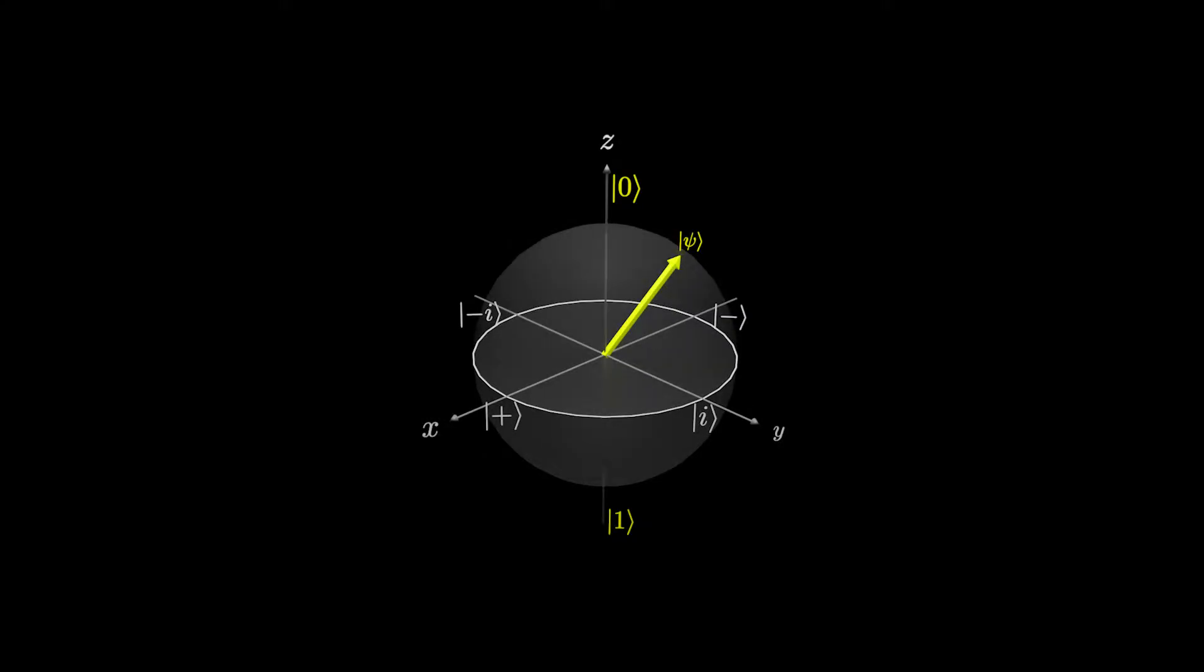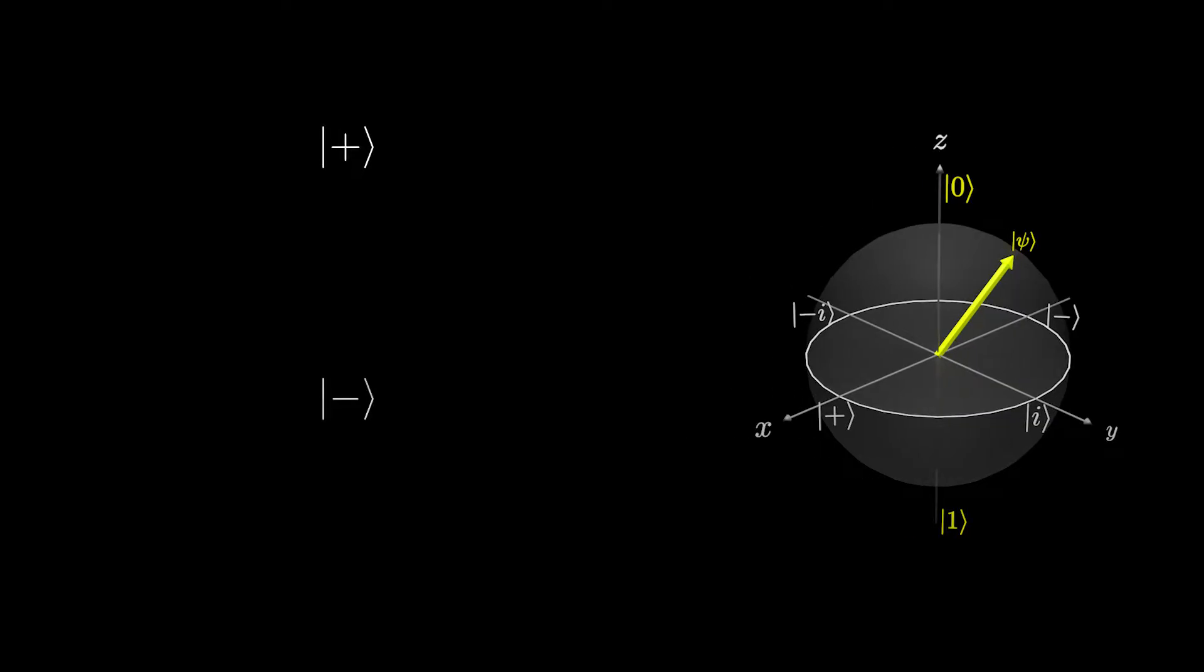In earlier lessons, we saw that on the equator, we have four states: the plus state, minus state, i state, and negative i state.